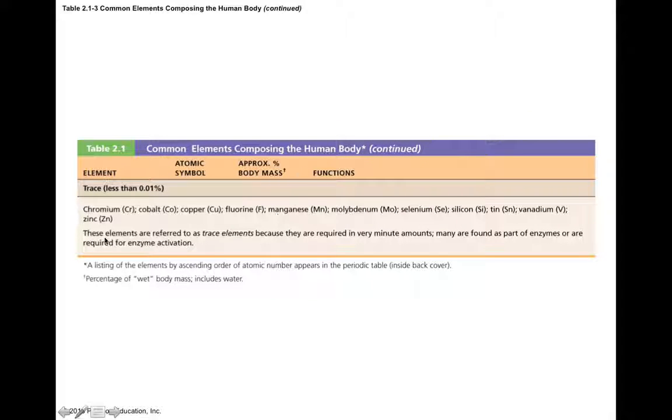Other trace elements you might find in your body are things like chromium, cobalt, copper, fluorine, manganese, molybdenum, selenium, silicon, tin, vanadium, and zinc. These are considered trace elements because they're required, but in very minute amounts. Many are found as part of enzymes or they're required for enzyme action.